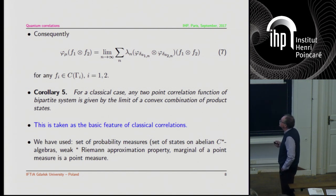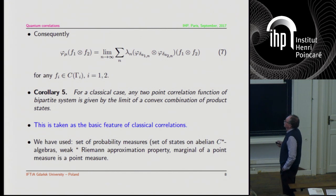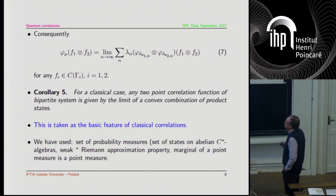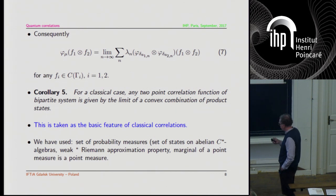It is good to make a small résumé of what we have used: the set of probability measures, which we call the set of states on an abelian system algebra; the Riemann approximation property; and the fact that the marginal of a point measure is again a point measure.